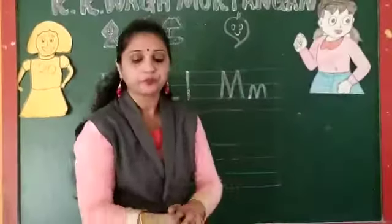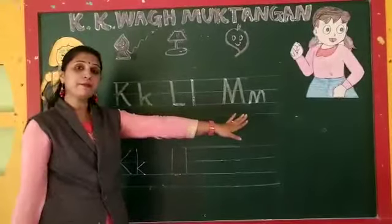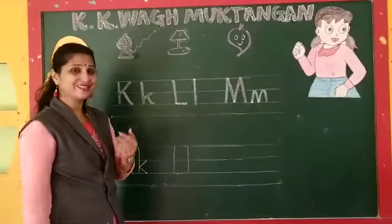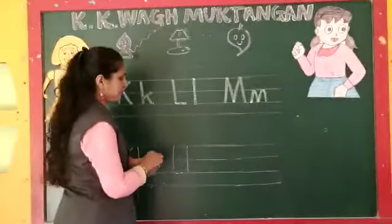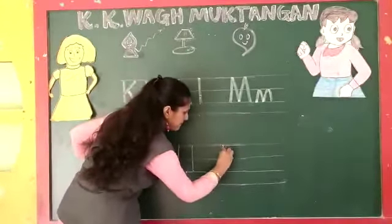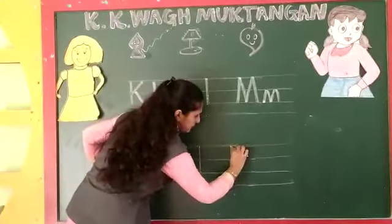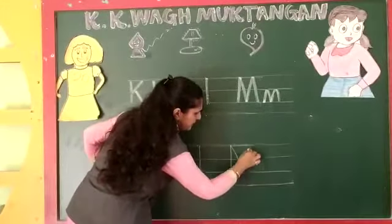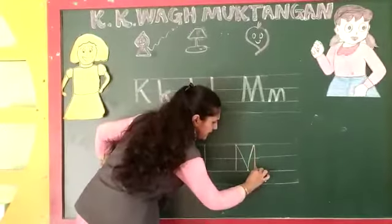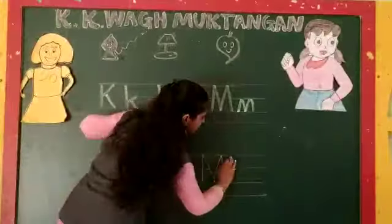Our next letter is letter M. What is the sound of M? M says ma. Mama, manu. So first we have to draw M. Capital M — slanting, slanting, slanting, and again slanting, then slanting.